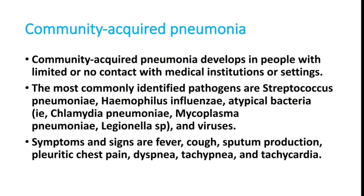Community acquired pneumonia occurs in people with limited or no contact with medical institutions or settings — they have not gone to hospital but develop pneumonia. The most commonly identified pathogens are Streptococcus pneumoniae, Haemophilus influenzae, atypical bacteria like Chlamydia, Mycoplasma, Legionella, and viruses.